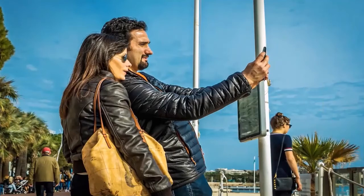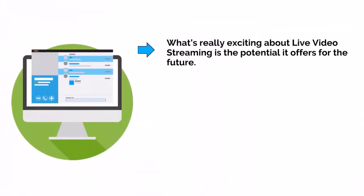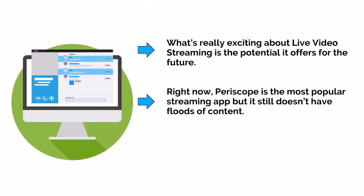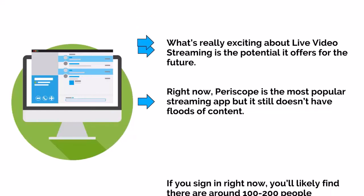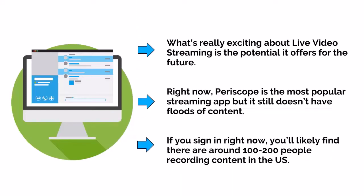What you'll also find is people using Periscope for experimental purposes. When you first get the app, people will just open their phones, press the camera, and then chicken out and stop filming. Right now, Periscope is the most popular streaming app, but it still doesn't have floods of content — around 100 to 200 people are recording content in the US at any given time.